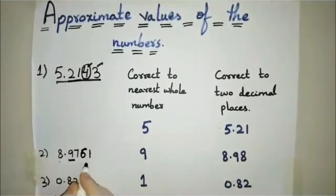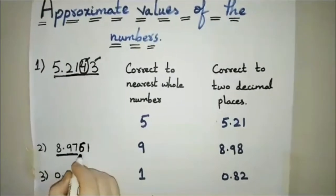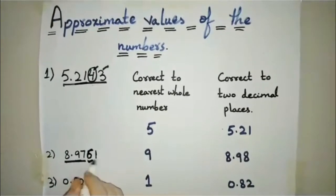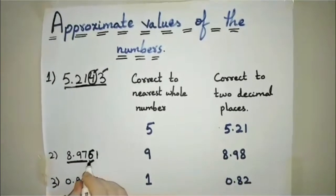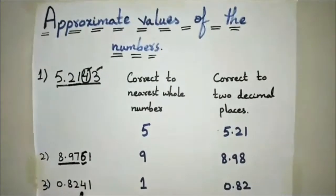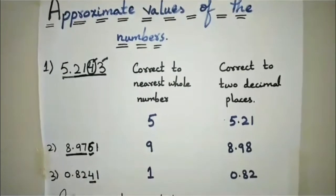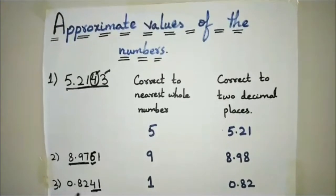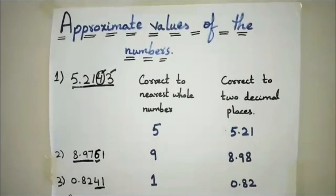For 8.9761 correct to two decimal places, we observe the third decimal place, which is 6 — greater than 5 — so we add 1 to 7, giving 8.98, and drop the remaining digits. For 0.8241, we observe the third decimal place, which is 4 — less than 5 — so we drop the last two digits without adding 1 to 2. 0.82 is the answer.